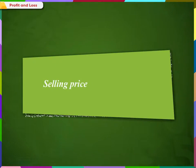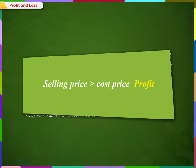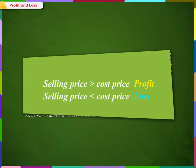So we can say that if the selling price is greater than the cost price, then it is a profit. Whereas, if the selling price is less than the cost price, then it is a loss. In short, cost price is called CP and selling price is called SP.